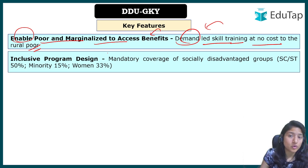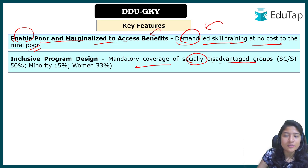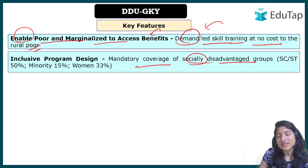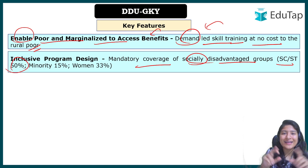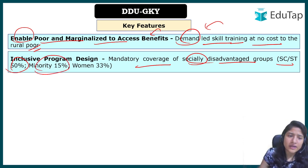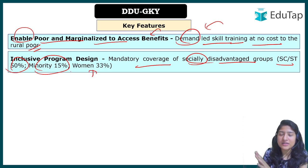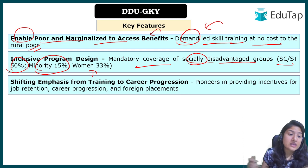Regarding inclusive diversity, there are mandatory coverage targets for socially disadvantaged groups. In each training batch, 50% should be SC/ST candidates, 15% other minorities or OBCs, and 33% women. General poor youth are still eligible — these are reserved seats to ensure representation of socially disadvantaged groups.